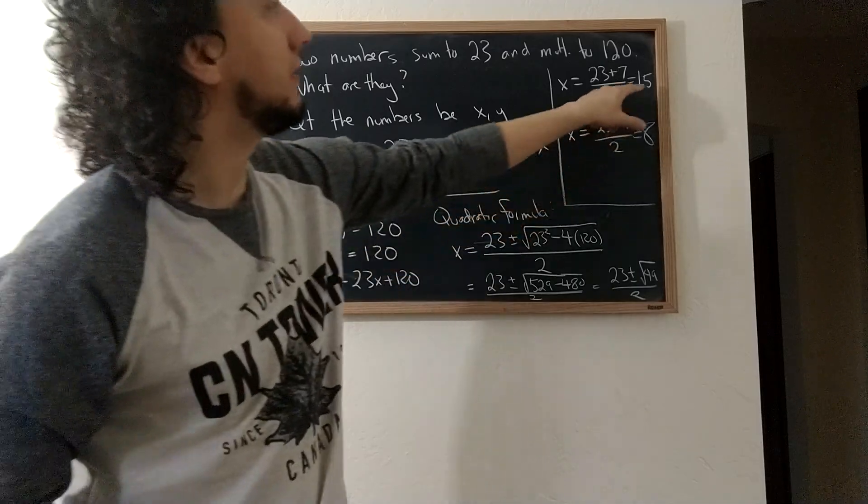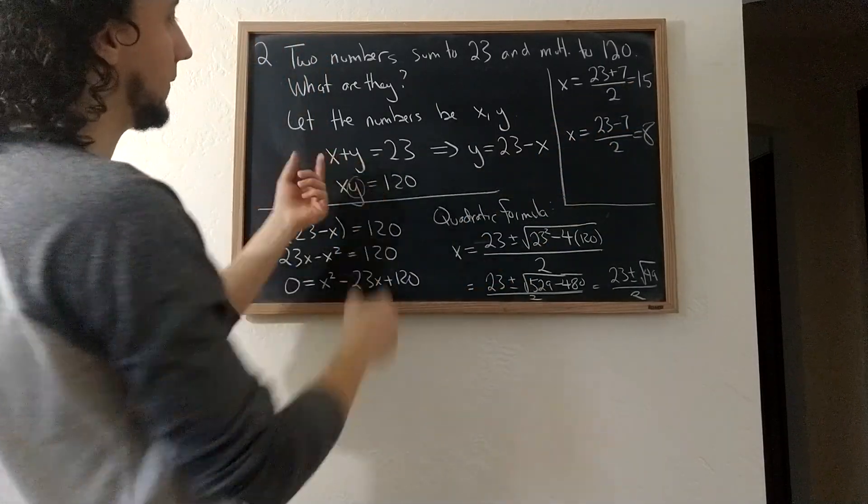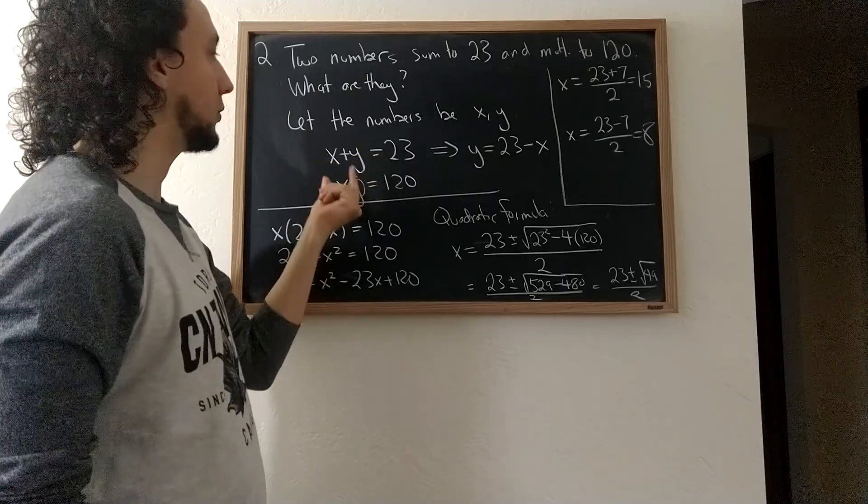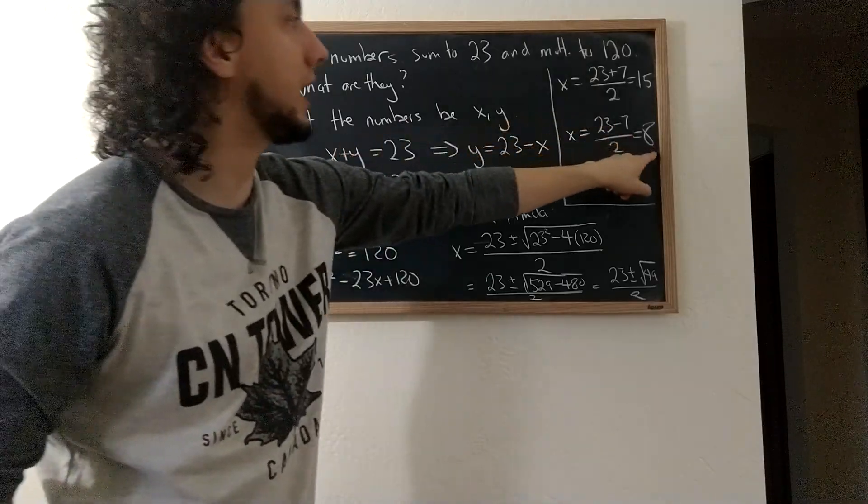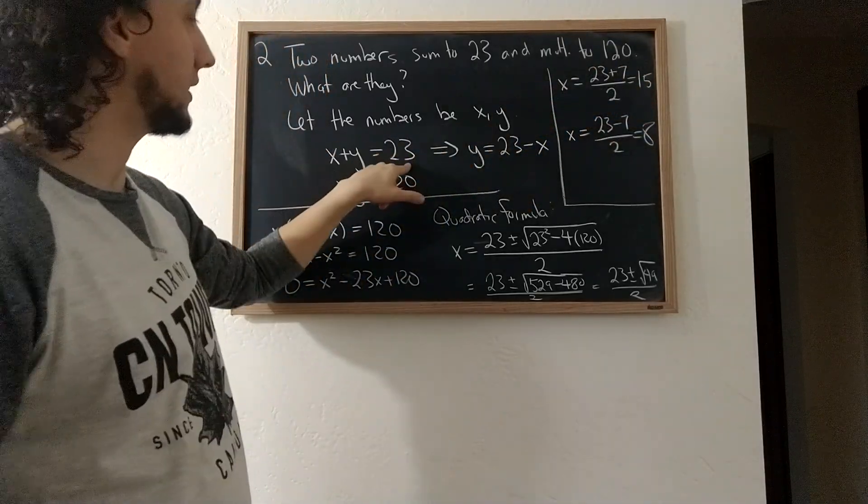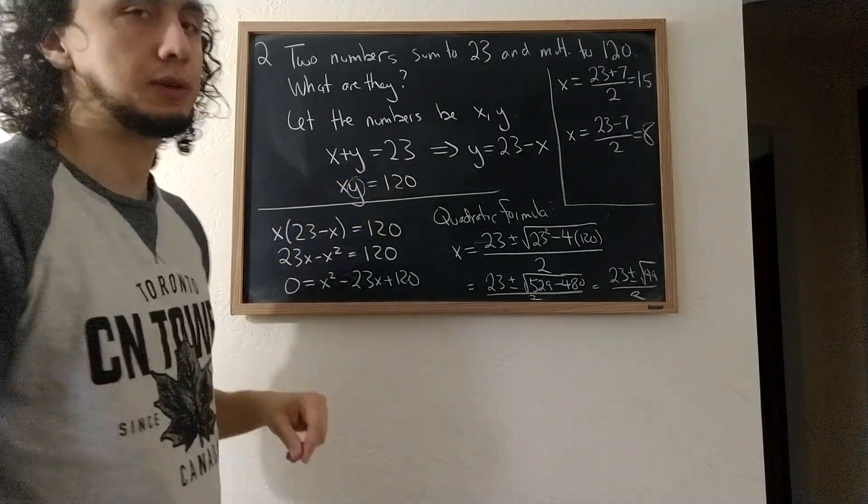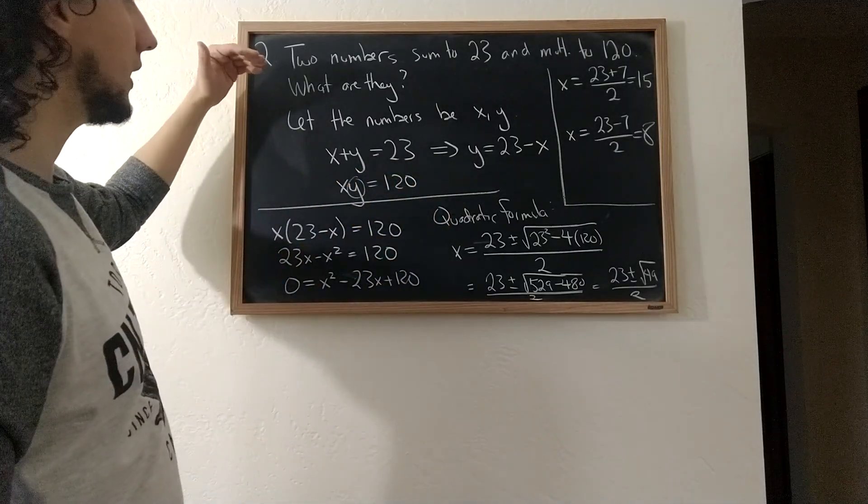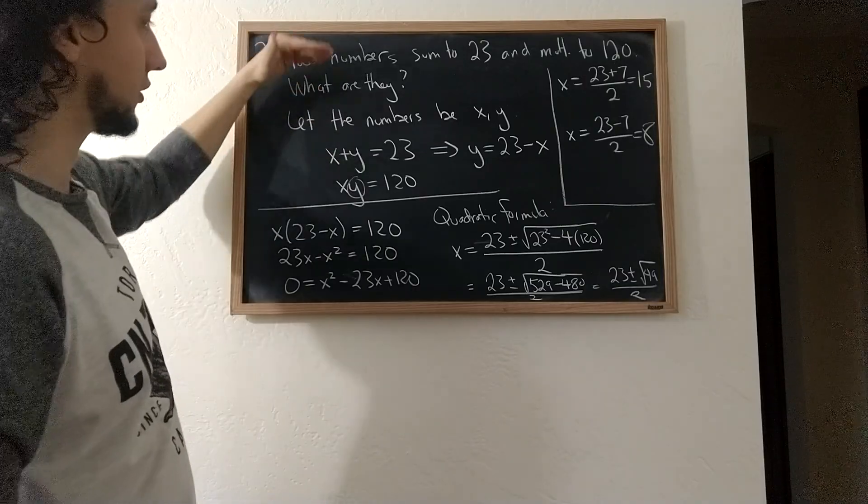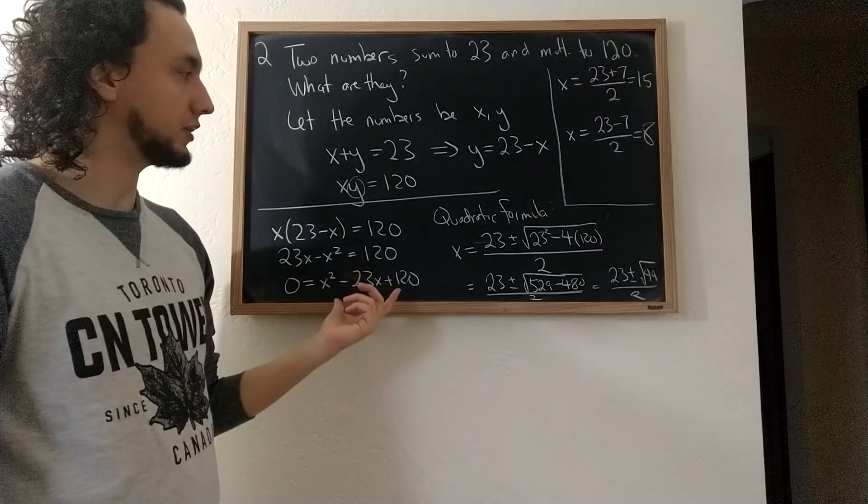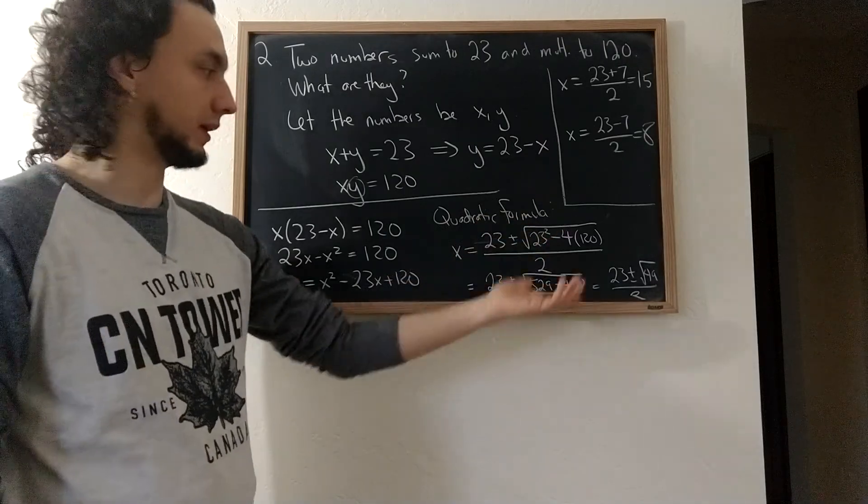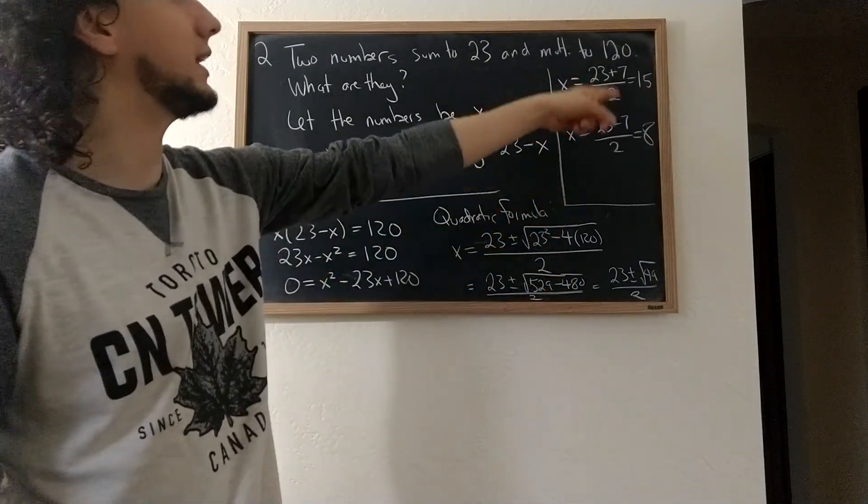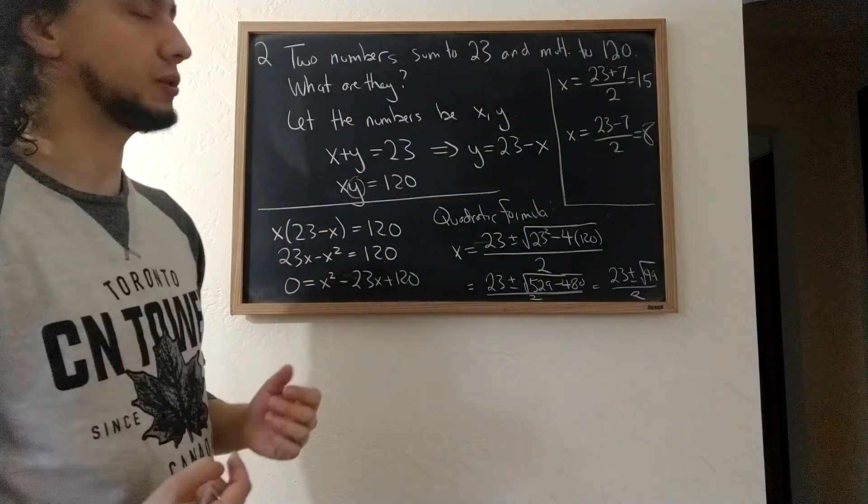And indeed, 15 and 8 are exactly the two numbers that work in these equations. They sum, 8 plus 15 or 15 plus 8, sum to 23 and multiply to 120. So this is an example of using, of translating our constraints into an equation that gives us a quadratic equation, which we then solve via techniques we've seen before, and we can find the solution to our problem.